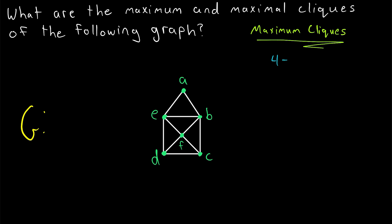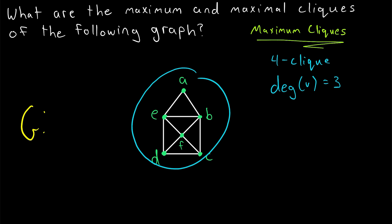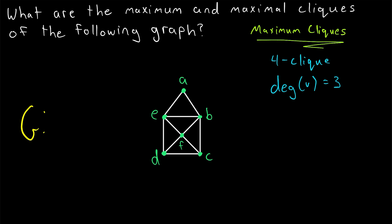So then the next possibility for maximum clique would be a four-clique. Using the same logic, in a four-clique each vertex would need to be adjacent to the other three vertices in the clique. So for this graph to have any chance of containing a four-clique, it needs to have at least four vertices with a degree of at least three. And we see that this graph has one, two, three, four, five vertices with a degree of at least three.